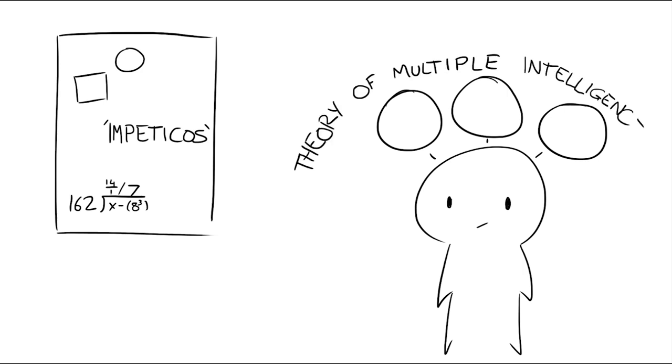He then developed his theory of multiple intelligences, which describes nine areas where people can be proficient.